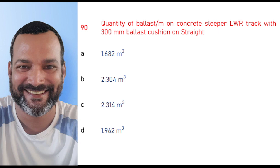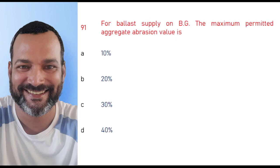The quantity of ballast per meter on concrete sleeper LWR track with 300 mm ballast cushion on a straight is 2.304 cubic meters. For ballast supply on BG, the maximum permitted aggregate average value is 30%, and the maximum permitted aggregate impact value is 20%.